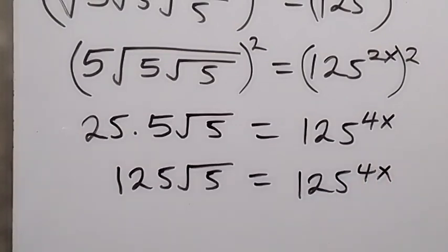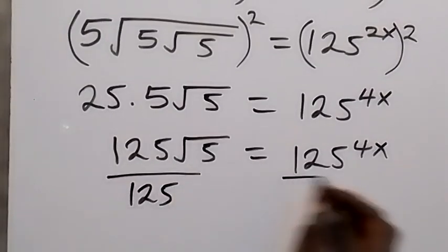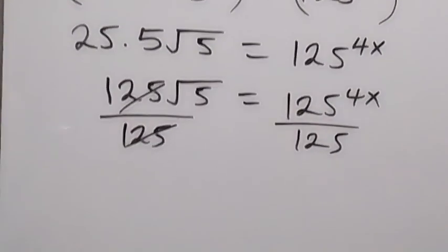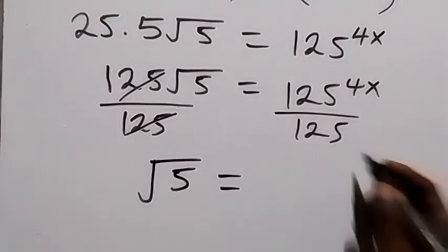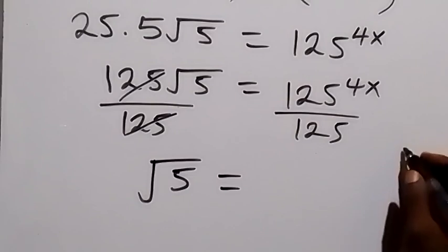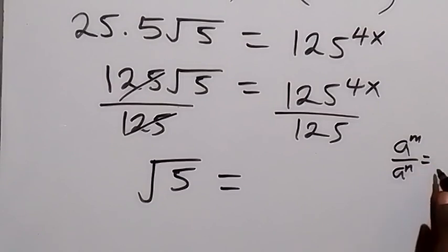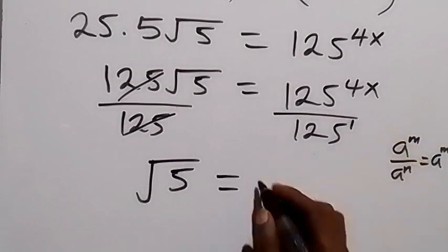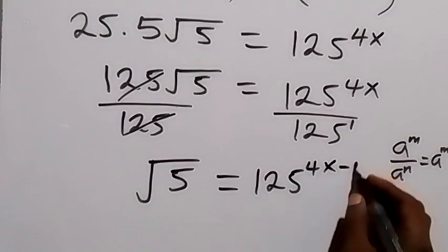In the next step, let's divide both sides by 125. The 125s cancel on the left and we are left with root 5. On the right side, from the law of indices — when we have a raised to power m divided by a raised to power n, this can be written as a raised to power m minus n — so this becomes 125 raised to power 4x minus 1.